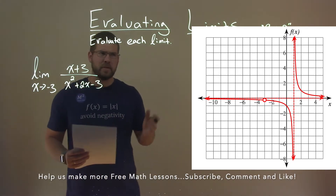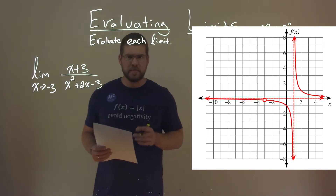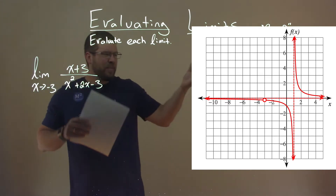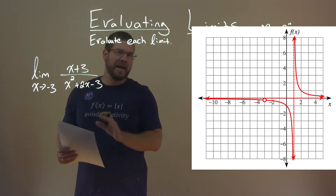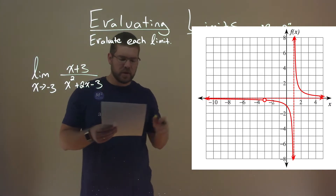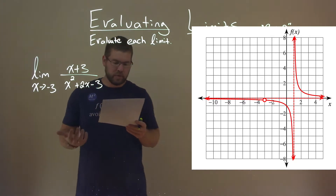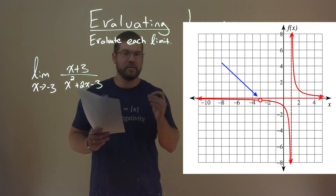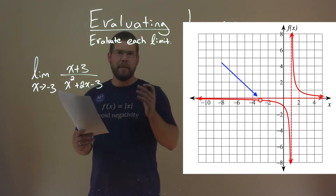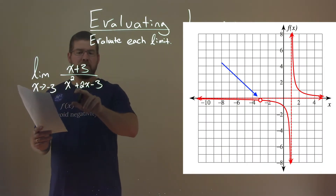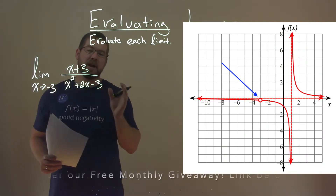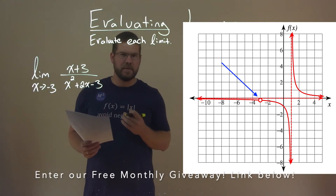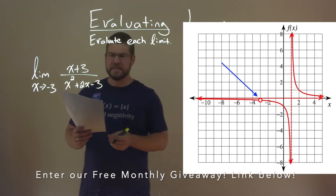Now, we can graph this limit, or we can try to solve it algebraically. If we look at a graph here, what happens at negative 3? Well, we have an open circle there at negative 3, meaning that at some value for x, if we plug in the denominator, it will cause the denominator to equal 0, and we can't have that value exist there.